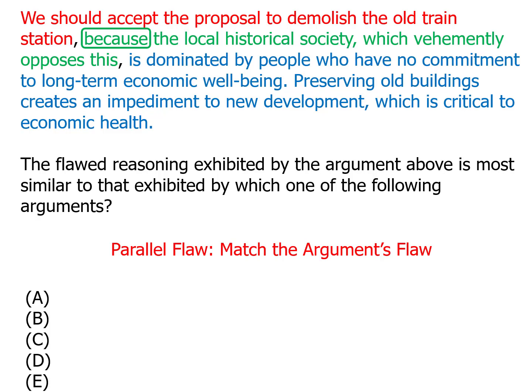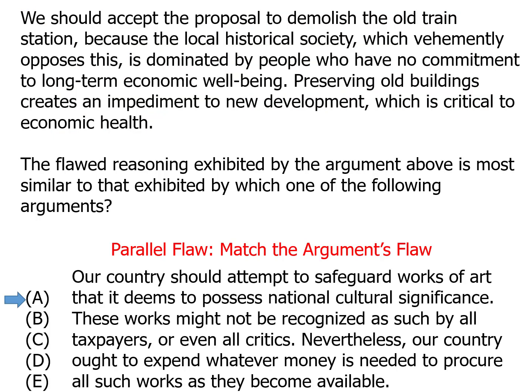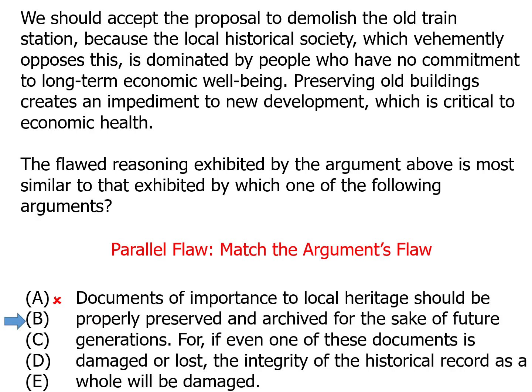When we go to the answer choices, we're going to be looking for an argument where somebody does that. Answer choice A is what we often call a same-subject trap. Safeguarding works of art is very similar to safeguarding buildings that have historical value, but the similarity extends only to the subject. The reasoning here isn't that there's a group we should oppose and then do the opposite of what they say — it's just that we should do something and there are some people who might not get it. So it's not our answer.